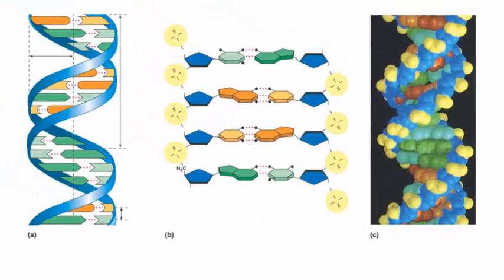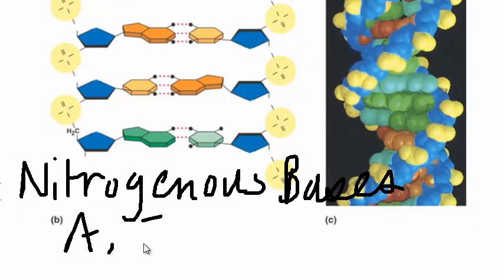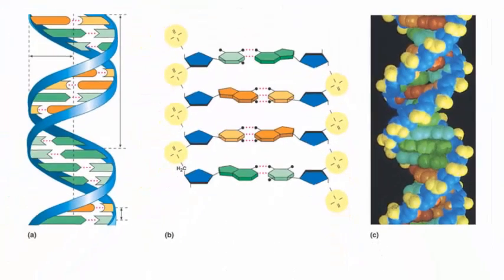Now these bases, they're called nitrogenous bases. So A, T, G, and C are nitrogenous bases. They fall into two categories. They can either be what are called purines or pyrimidines. The T and the C are the pyrimidines.